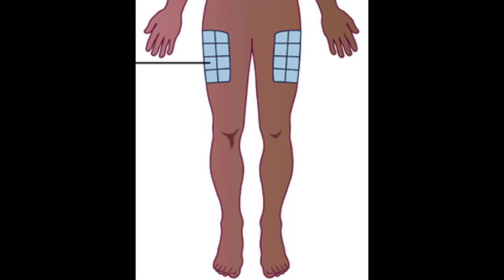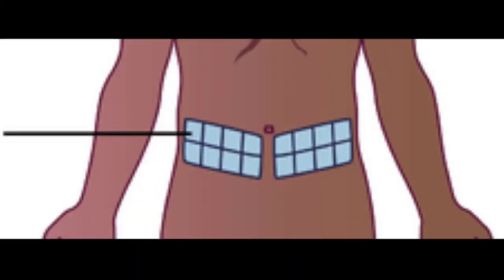Another way to think of the thigh site is the middle third of the lateral aspect of the upper leg. To locate injection sites on the abdomen, draw an imaginary line below the lower ribs as far around as you can pinch up fatty tissue folds. Abdominal injections must avoid a one-inch area around the navel.